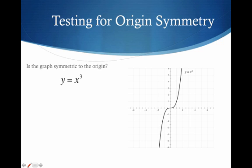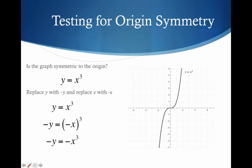Is this graph symmetric to the origin? We have y equals x cubed — the cubing function. Let's replace y with negative y and x with negative x. This is the algebra of how to do it. We can see that we get negative y equals negative x cubed. Multiply both sides by negative 1, we get y equals x cubed — we get back to our original. So here's a situation where we have symmetry to the origin.